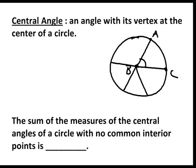The measure of all the central angles of a circle is going to be 360 degrees if those angles have no common interior points. In this picture, I've added a few other central angles. If I take all these central angles — angles 1, 2, 3, 4, and 5 — and add them together, I'm going to get 360.